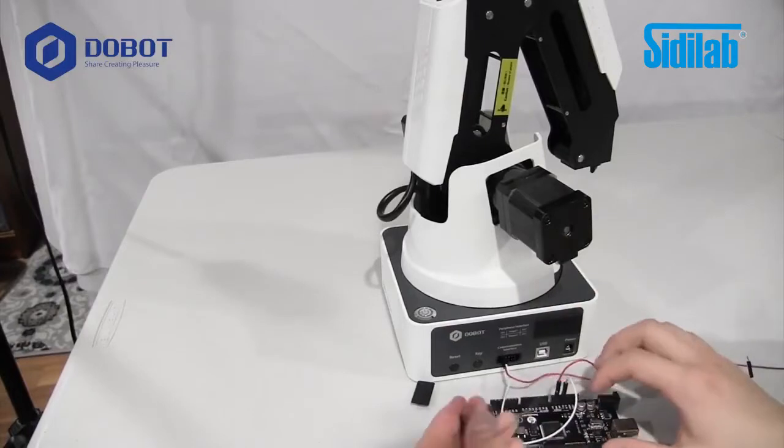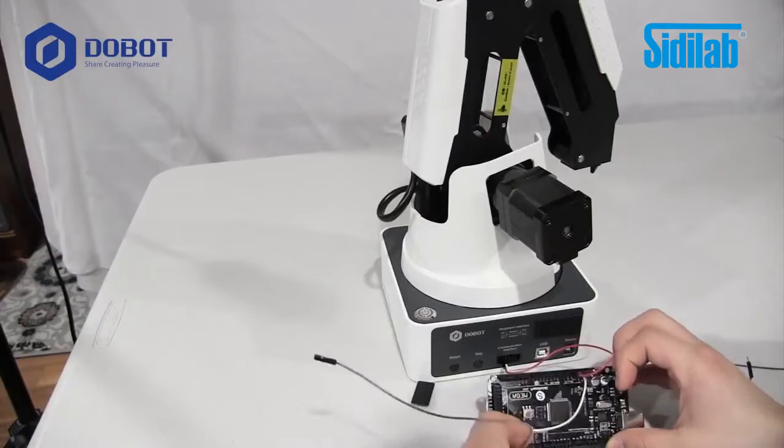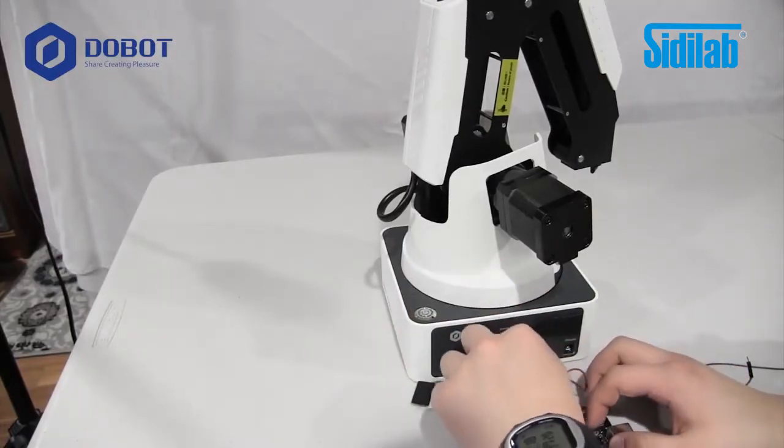Now, take another wire, plug it into RX or pin 19, digital pin 19, right there. Plug it into the one right next to GND to the right.